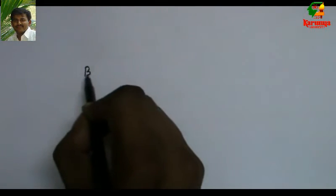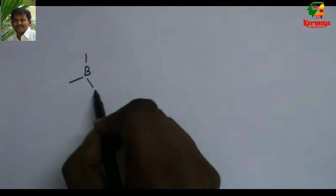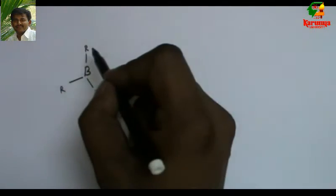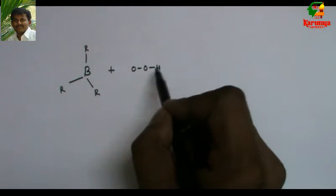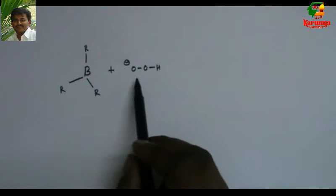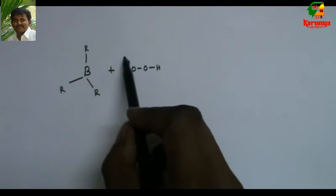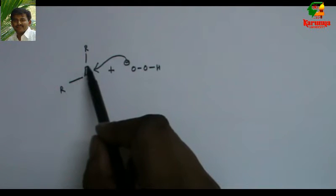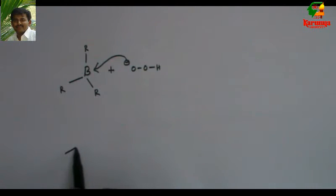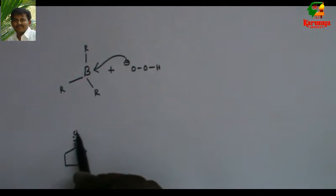I go for oxidation in the presence of H2O2 and NaOH. What happens? Boron compound, when it is treated with this anion generated from H2O2 by the reaction with NaOH, this attacks here. Since it is delta plus, a similar thing happens.